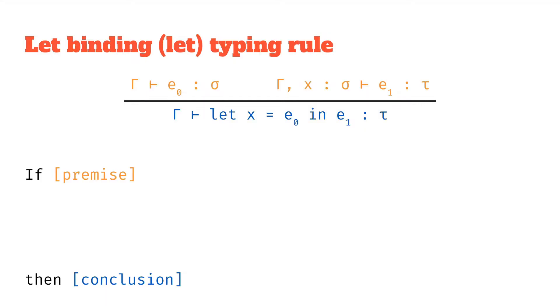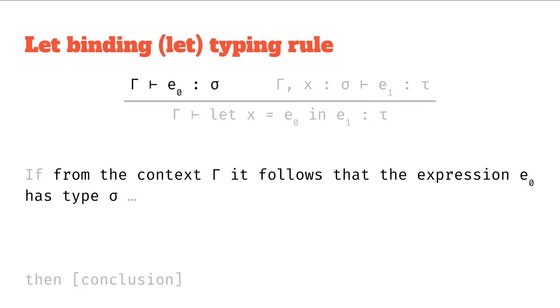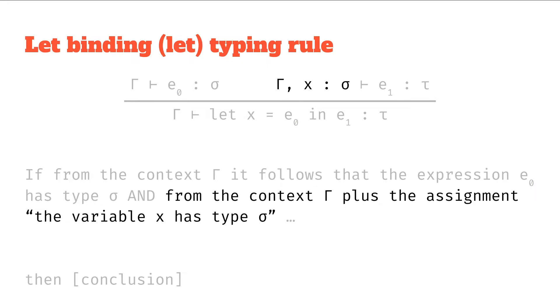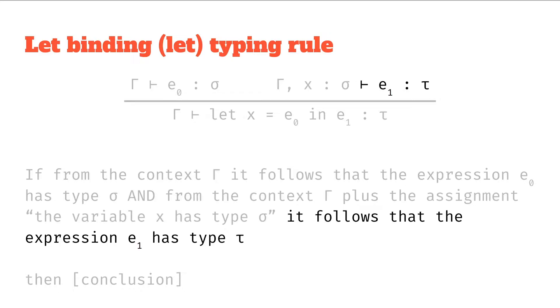So let's try reading through this rule. Again we've got this rule structure, an if-then setup where if the premise holds, then the conclusion holds. Starting on that if statement: if from the context gamma it follows that the expression E0 has type sigma, and from the context gamma plus the assignment that the variable x has type sigma, it follows that the expression E1 has type tau.